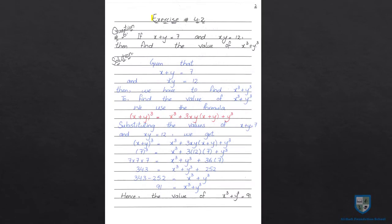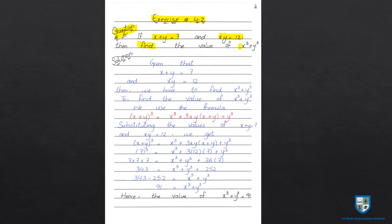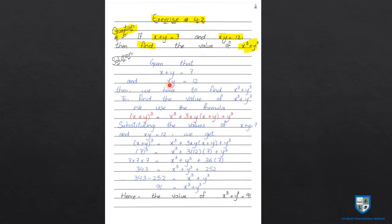Next, Exercise 4.2, question number 6. Question number 6 states: if x plus y is equal to 7 and xy is equal to 12, then find the value of x cube plus y cube. So we need to find x cube plus y cube, given x plus y equals 7 and xy equals 12. Let us look at the solution. In the first step, we write the given data: given that x plus y equals 7 and xy equals 12.